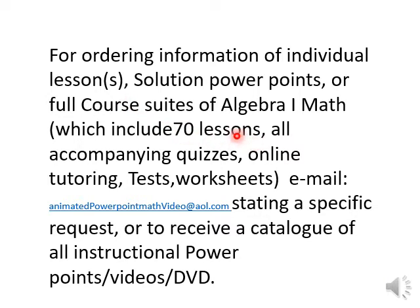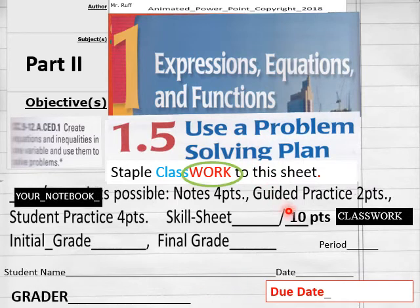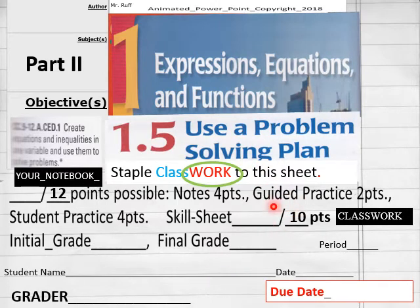Hello everybody, getting ready to do lesson 1.5 part 2 today, classwork for algebra 1 math. On your class worksheet today you got 10 points, have that out ready to go students. And you'll have 12 points going into your notebook or your notebook guide, have that ready to go. Use a problem solving plan part 2 students, put your name, date, period here.